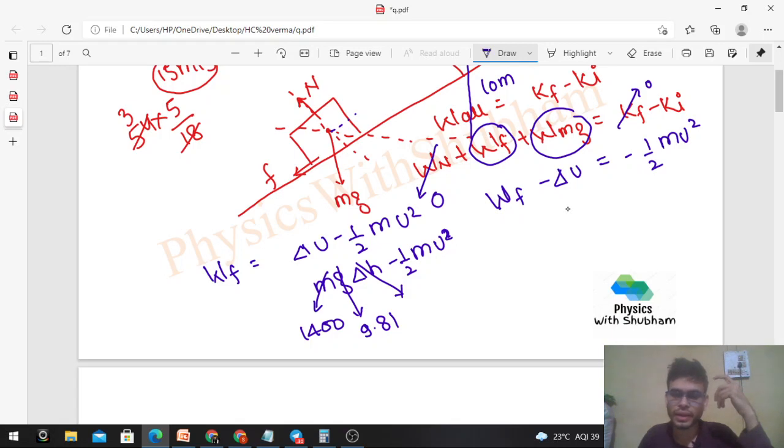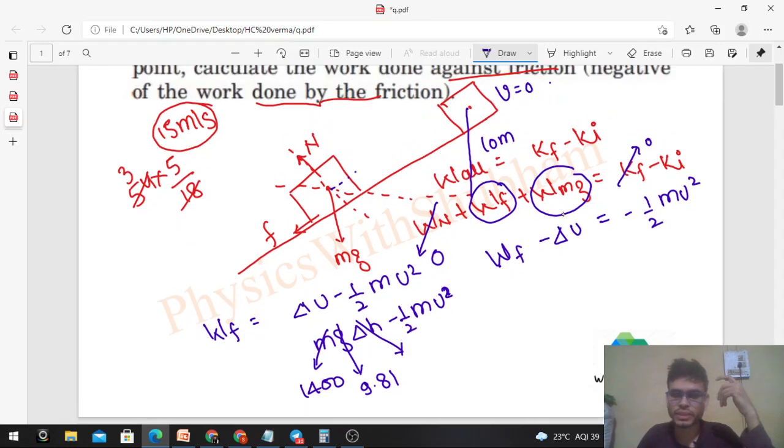That is 10, right? h final minus h initial - this is your h final and this is your h initial. So delta h will be 10, and minus half of m will be again 1400. What is u, the initial speed? That is given: 15 meters per second. So this is the work done by the friction.